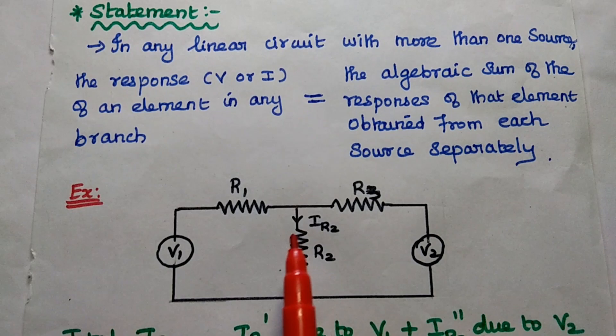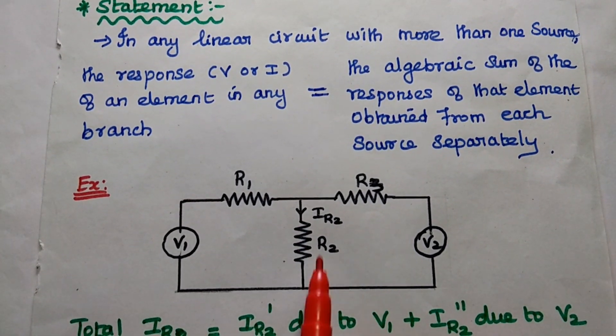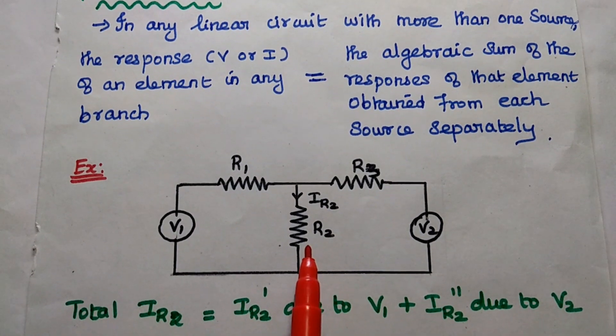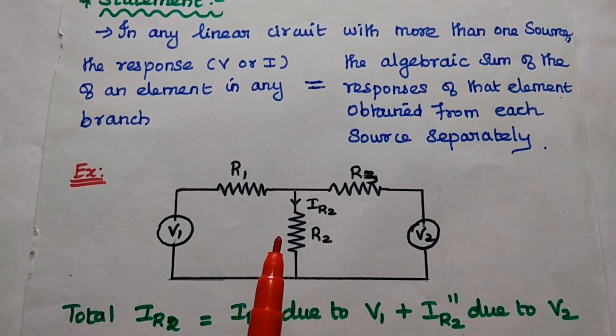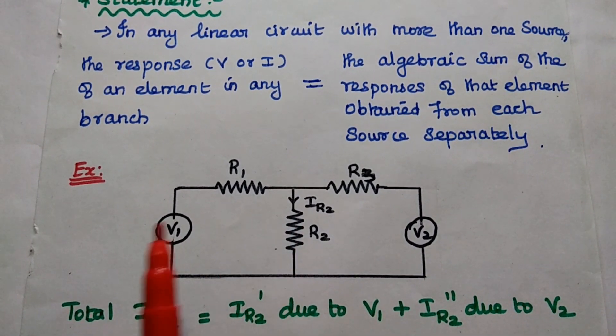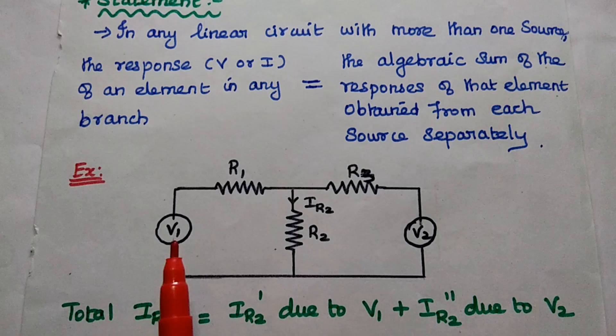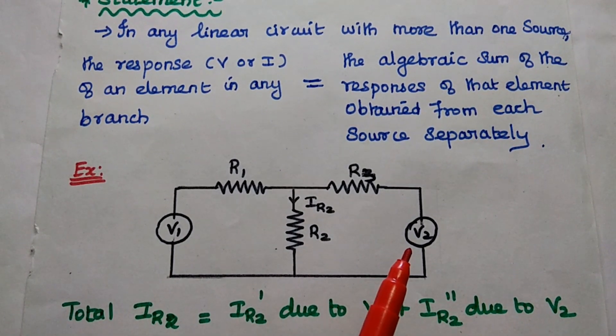So here we can consider a circuit which is having two voltage sources. Here we are going to find out the current through this R2 resistor. So for that, we are going to find out the current through this R2 resistor due to this V1 voltage alone. At the time, this V2 voltage is short-circuited.